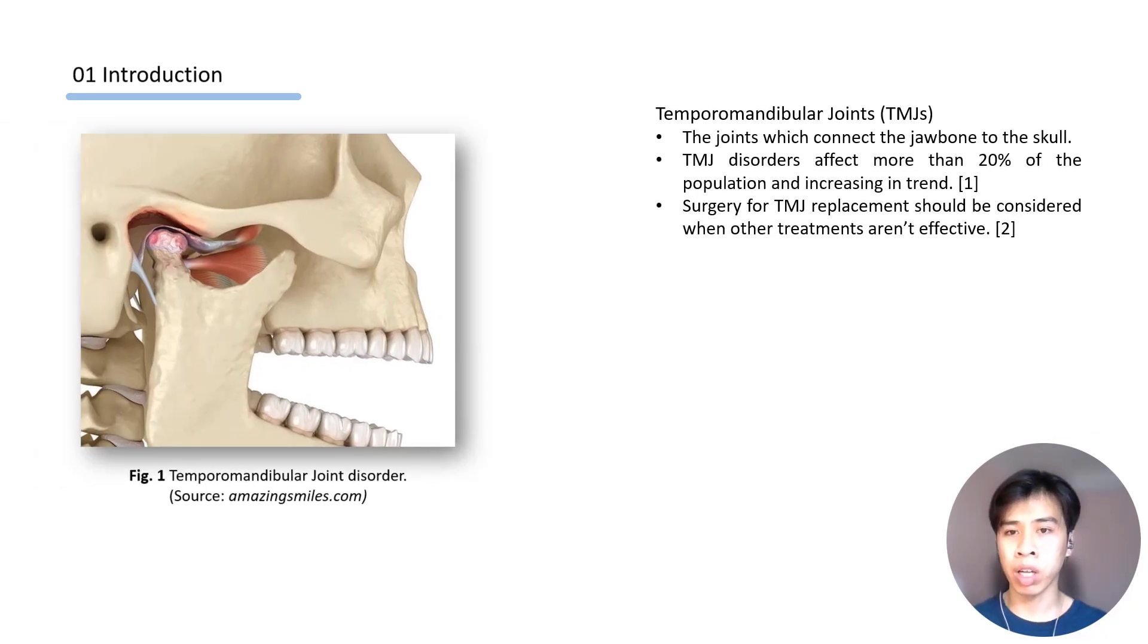The first part is introduction. The temporomandibular joints, or TMJs, are the joints connecting the jawbone to the skull. A significant health issue, TMJ disorders affect more than 30% of the population with an increasing trend observed in recent years. It is preserved in manipulative function and pain for the patient. So consequently, surgery for TMJ replacement should be considered when other treatments are not effective.